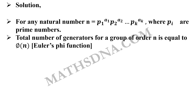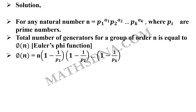The formula is: phi(n) equals n into (1 minus 1 by p1) into (1 minus 1 by p2) up to (1 minus 1 by pk).